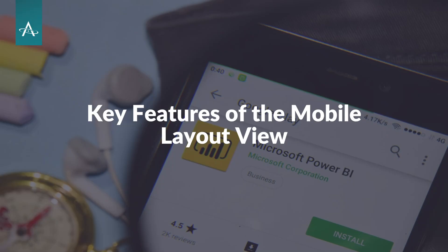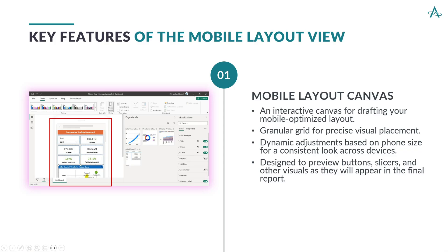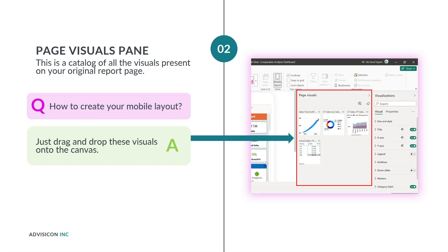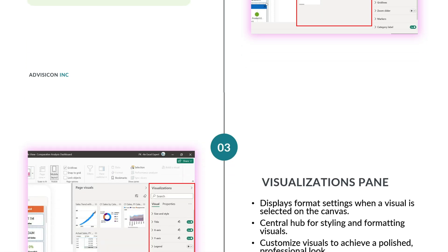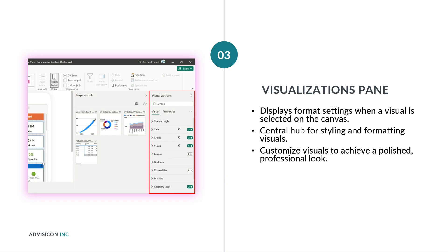Now let's explore the core features that make mobile layout design effective. The mobile layout canvas is an interactive workspace for creating mobile-optimized layouts. It includes a granular grid to help you place visuals precisely and dynamically adjust based on the device's size, ensuring your visuals look great on any phone. This canvas also lets you preview how elements like buttons and slicers will appear on mobile. In the page visuals pane, you'll find all the visuals from your original report page — simply drag and drop them onto the canvas. The visualizations pane allows you to adjust format settings and style your visuals to ensure they are mobile-friendly.